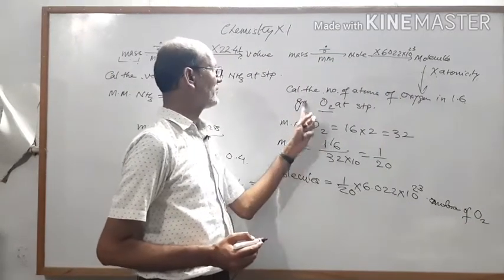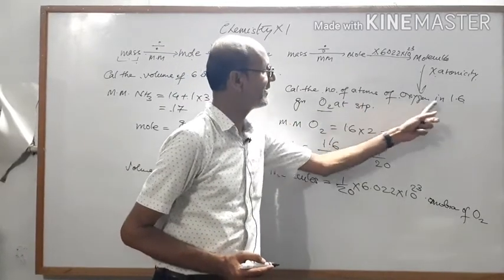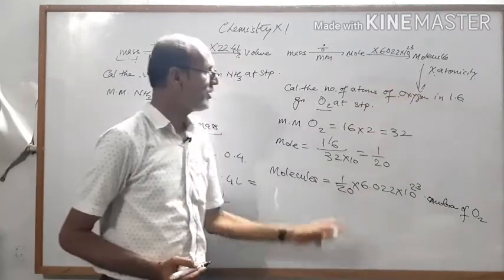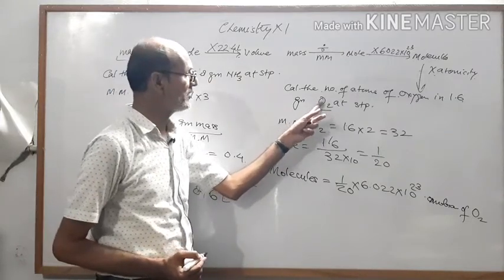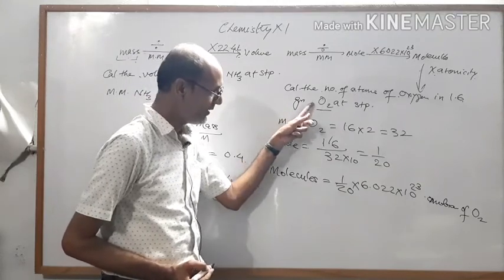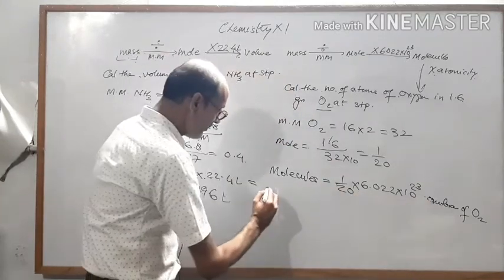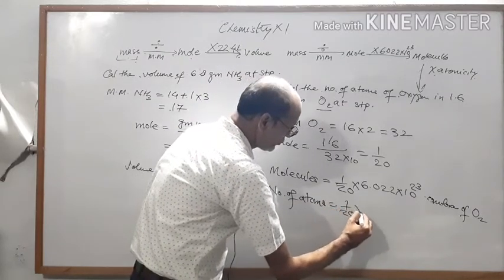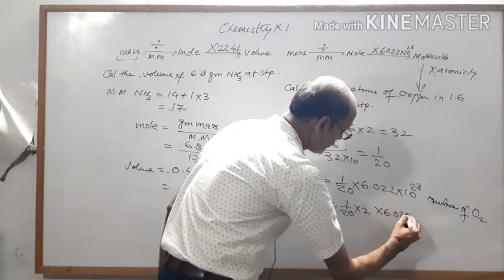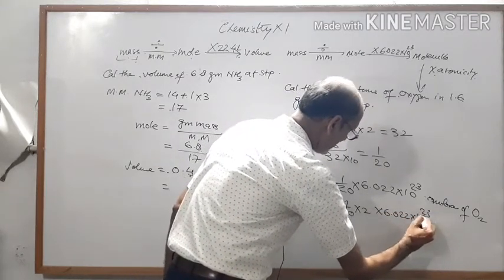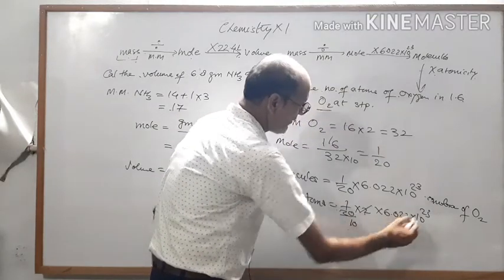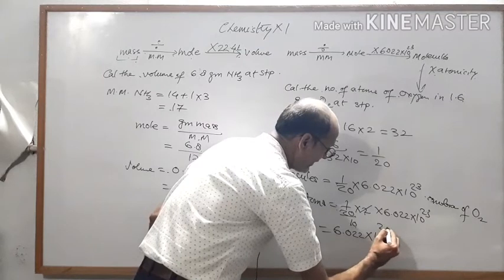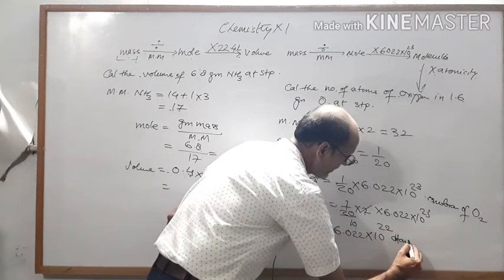Now you have to convert molecules into atoms. The question asks for the number of atoms of oxygen in 1.6 gram O2. Multiply by atomicity — oxygen is a diatomic gas, so its atomicity is 2. Number of atoms equals 1 by 20 into 2 into 6.022 into 10 to the power 23. Simplifying, this gives 6.022 into 10 to the power 22 atoms of oxygen.